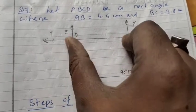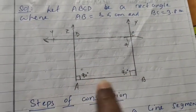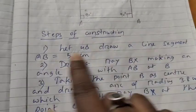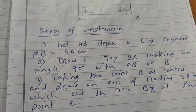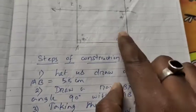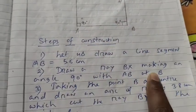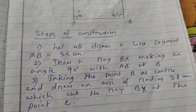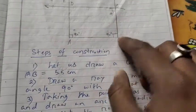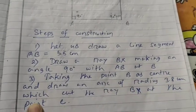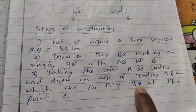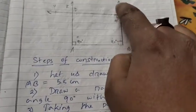So ABCD is our required rectangle. The steps of construction are: draw line segment AB equal to 5.5 cm; draw ray BX making an angle of 90 degrees with AB at point B; take B as center and draw an arc of radius 3.8 cm which cuts ray BX at point C.